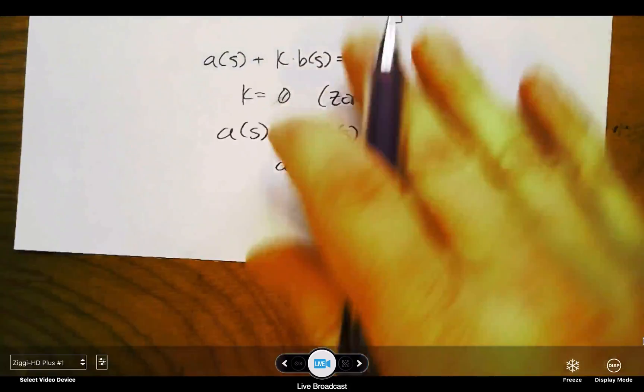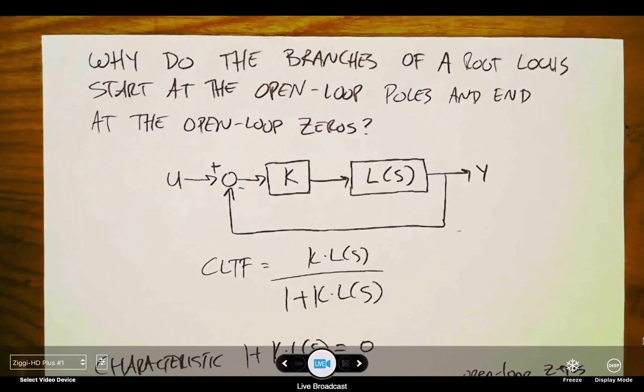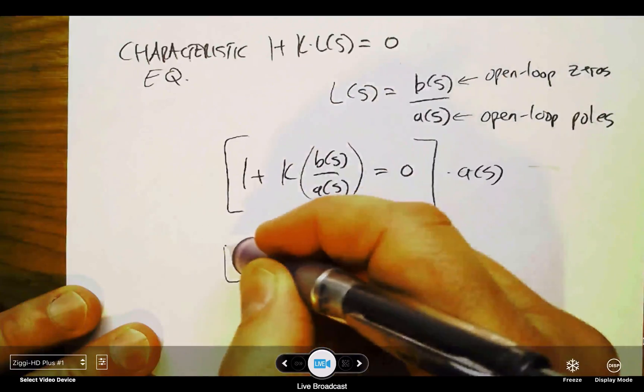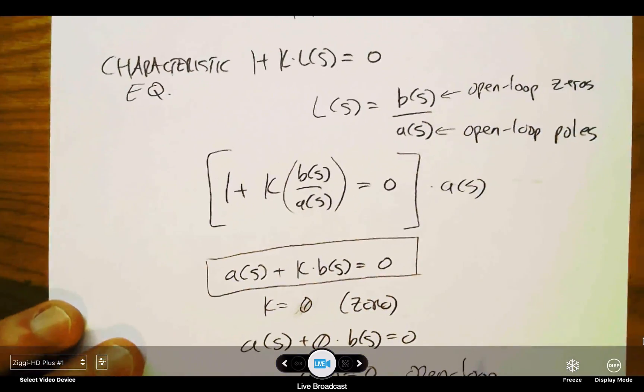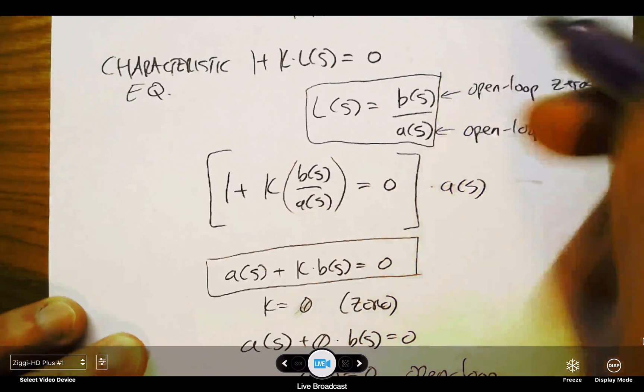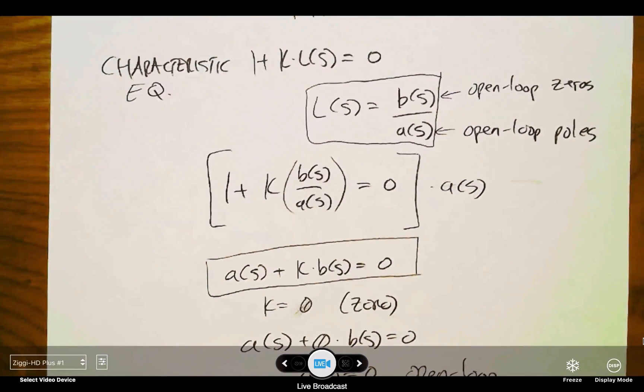So that's why a root locus starts at the open-loop poles and ends at the open-loop zeros. Mainly because we can reformulate in this way, understanding that a is the denominator of L, and b is the numerator of L. Hopefully that's helpful. Thanks.